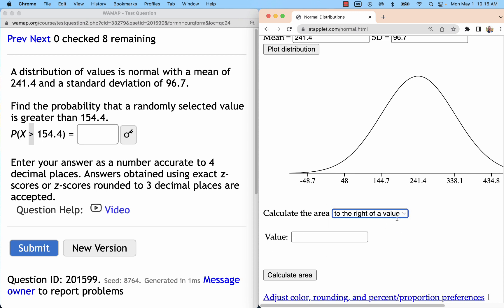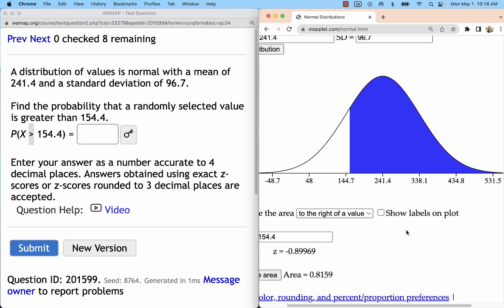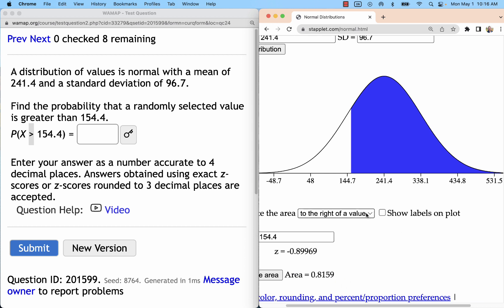Down here, shade to the right of a value of 154.4. There is an area of 0.8157. We also see a z-score - we can see that that's not quite a standard deviation to the left or on the negative side.